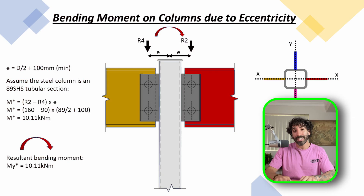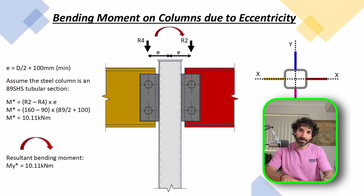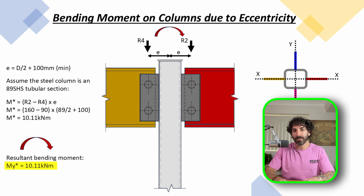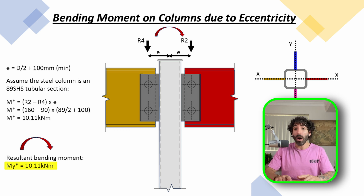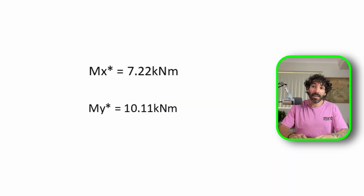We follow the same process for the other beams and find a bending moment of 10.11 kNm. This bending moment acts about the Y-axis, so we call it MY. Now we have MX = 7.22 kNm and MY = 10.11 kNm.